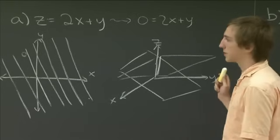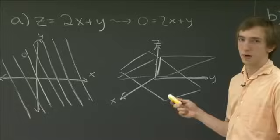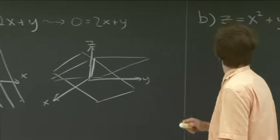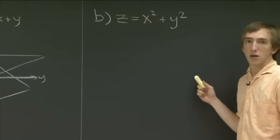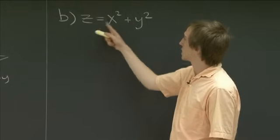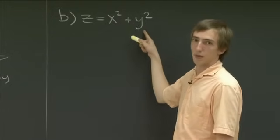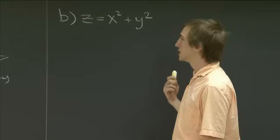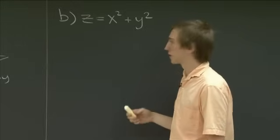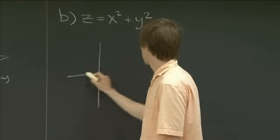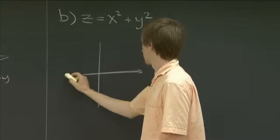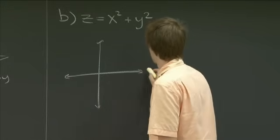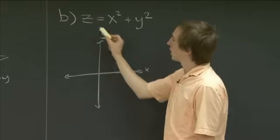So let's go on to a slightly more interesting example, which is part b, which I have written up here. So this is the function z equals x squared plus y squared. Actually, this is even easier to get started drawing the level curves for.